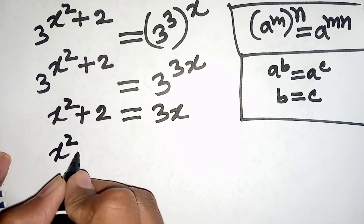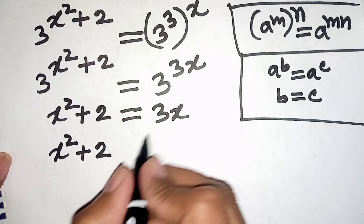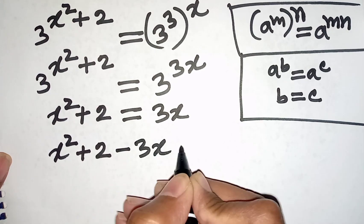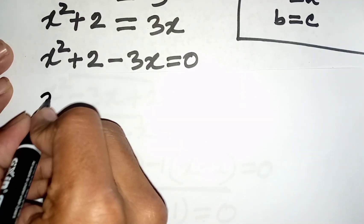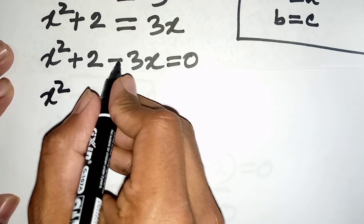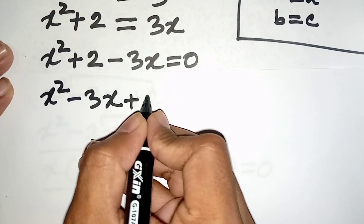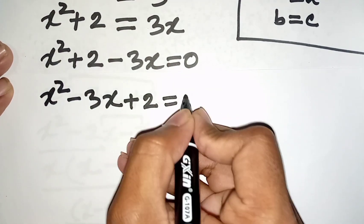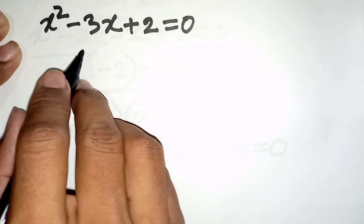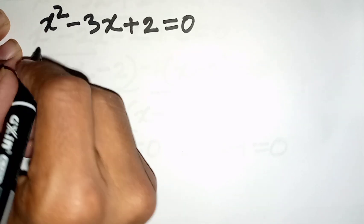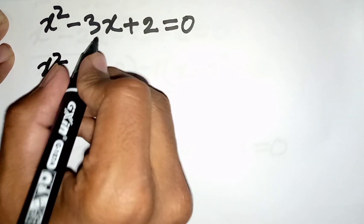We have x² + 2 = 3x. Taking 3x to the left side gives x² - 3x + 2 = 0. Now we can apply the quadratic formula or middle term factorization — we'll use middle term factorization.